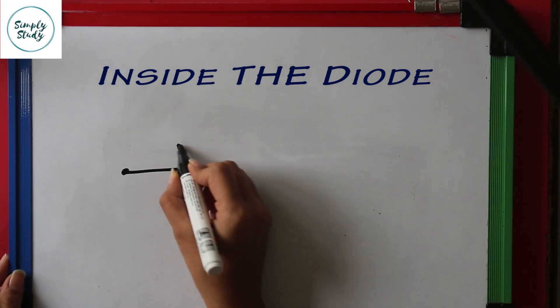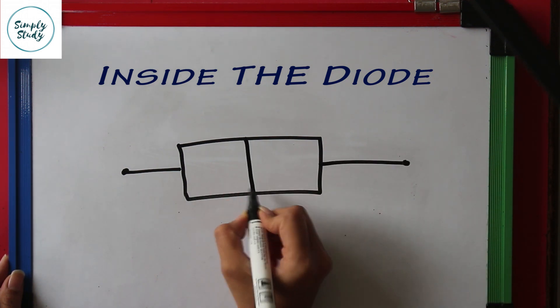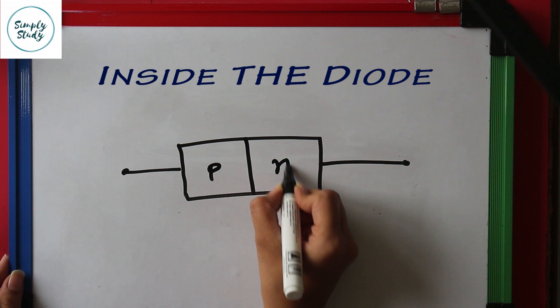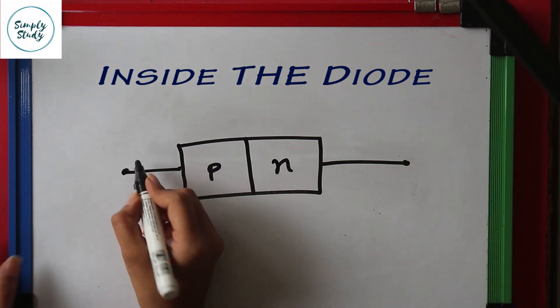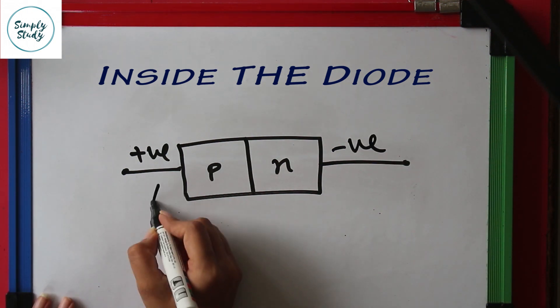A diode is a semiconductor device made up by the simple combination of P and N junction, and hence it is also called PN junction diode. Its P junction is called anode, that is the positive terminal, and N junction is called cathode, that is the negative terminal.